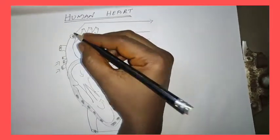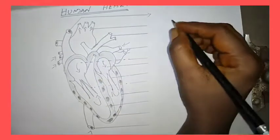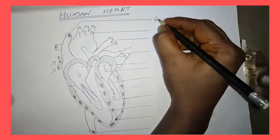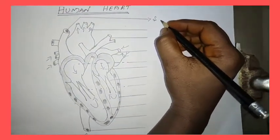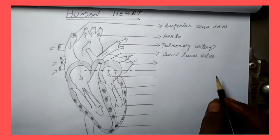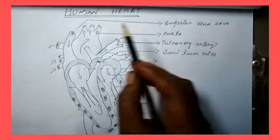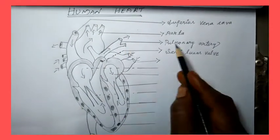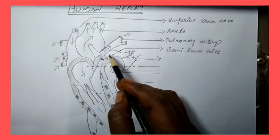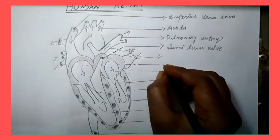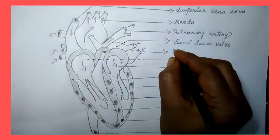First one, Superior Vena Cava. Listen to the parts. It's Superior Vena Cava, Aorta, Pulmonary Aorta, Semilunar Valve, Pulmonary Vein.